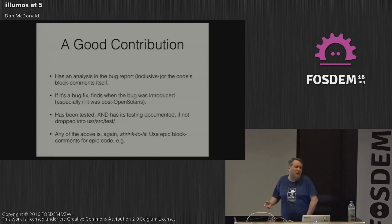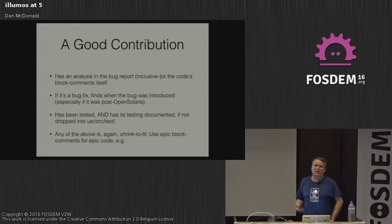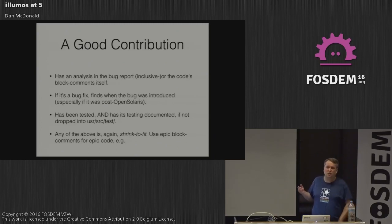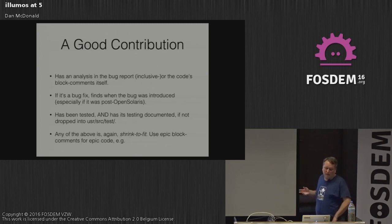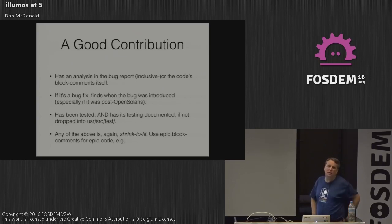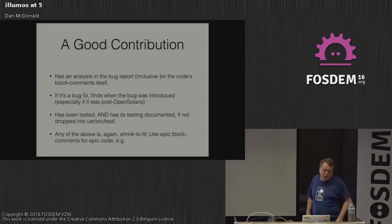A good contribution — and this is something all Illumos people inherited from Sun — means the analysis should be in the bug report. Our commit messages are small because they reference bug reports. If it's a bug fix, it's nice to know where it was introduced, especially if it was post-OpenSolaris where we have source history; some bugs have been around before OpenSolaris opened up. We want to make sure it's been tested — we have user-source tests in Illumos, especially for ZFS, and the ZFS test suite is wonderful.